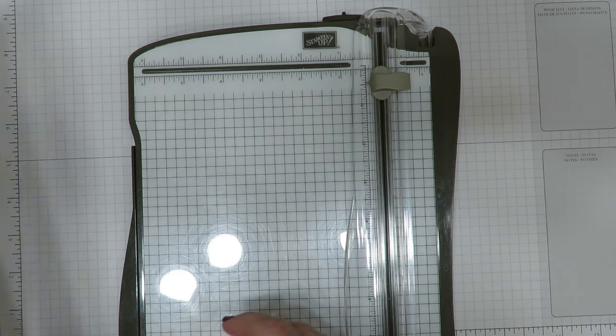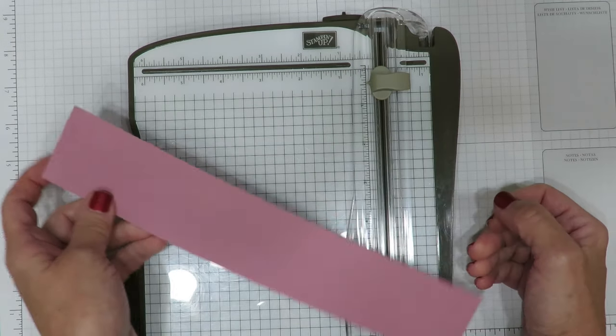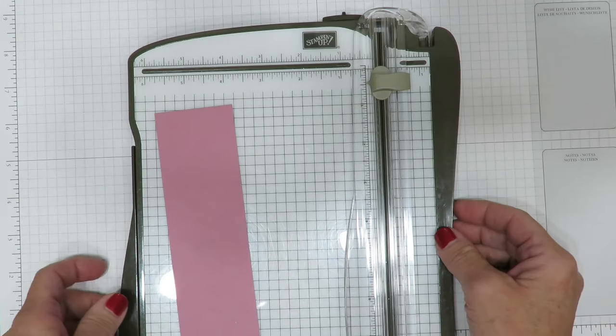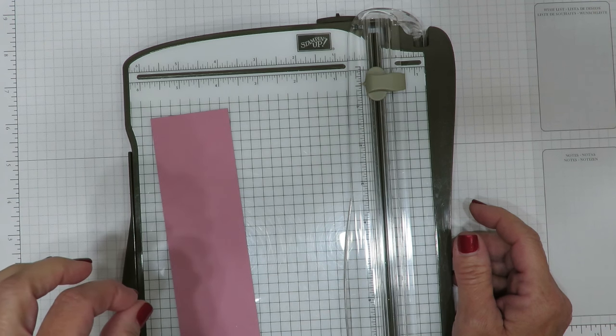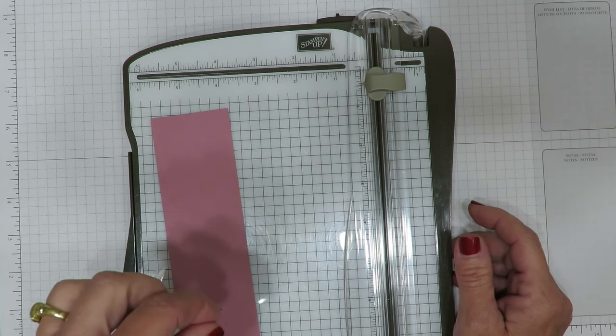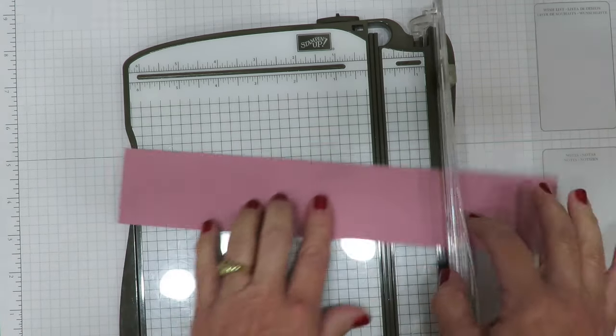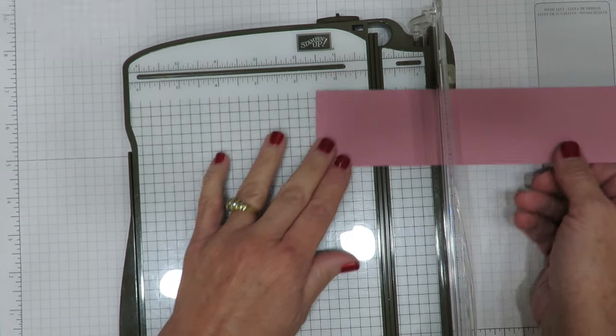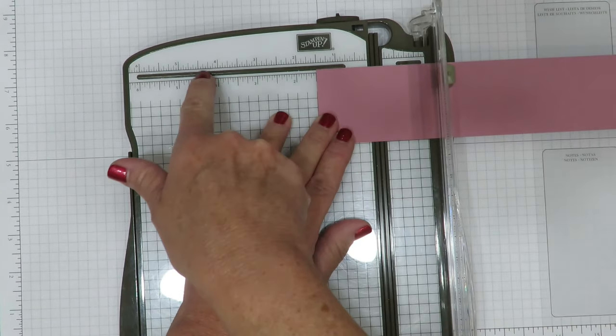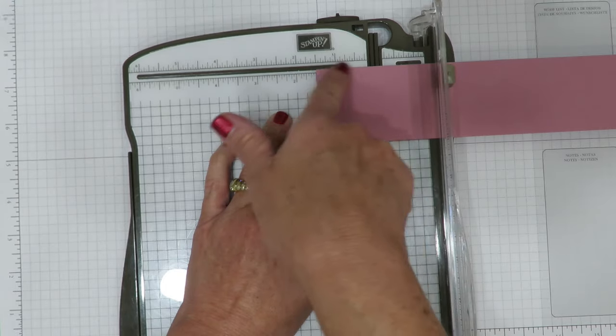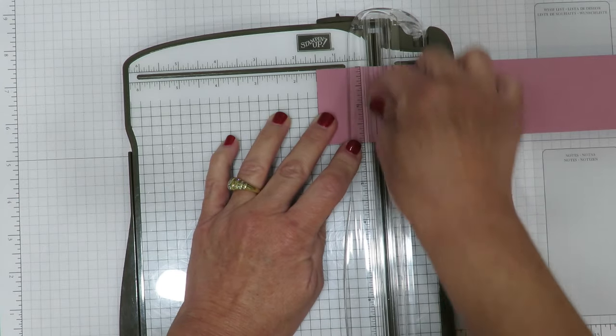I'm using a piece of sweet sugar plum cardstock. This measures 2 inches by 11 inches. You're going to be able to find all the cutting dimensions for today's project over on my blog. If you're viewing from YouTube, the link is in the description bar below so you can get there really easily. Scoring dimensions for this are going to be at 1 1/2 inches. So I'm going to line this up all the way here at the top. There's a nice straight bar here to make sure you get a nice straight line. So 1 1/2 and I'm going to score.